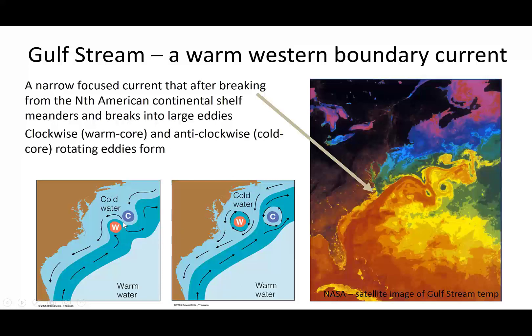The eddies retain the rotational direction of the meander from which they break off. You can see this one is spinning in a clockwise direction and this one is spinning in an anti-clockwise direction. In this case, the anti-clockwise spinning one has a cold core and the clockwise one has a warm core.